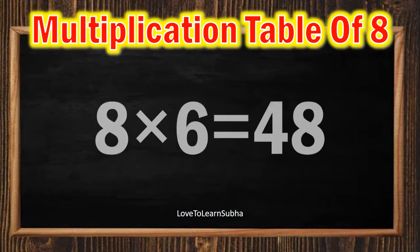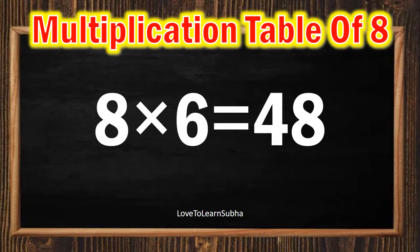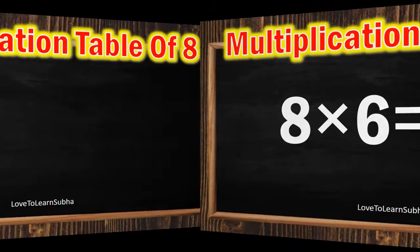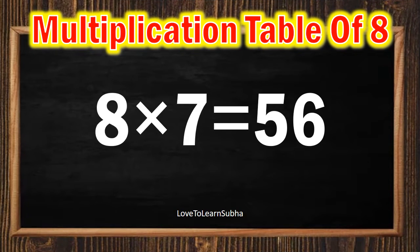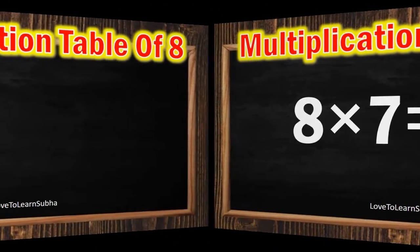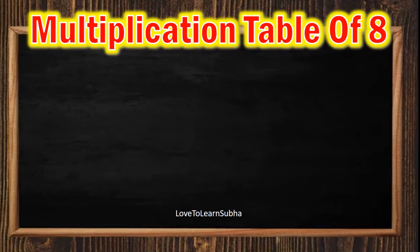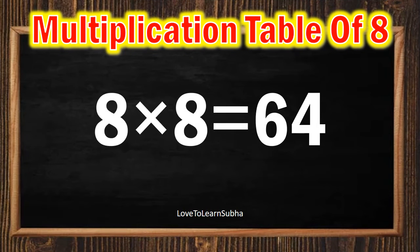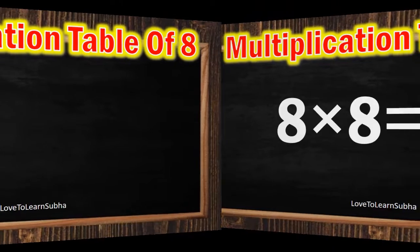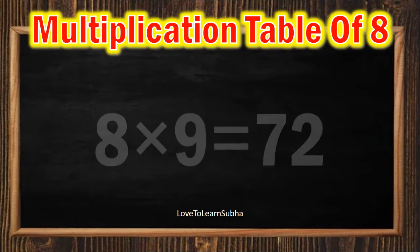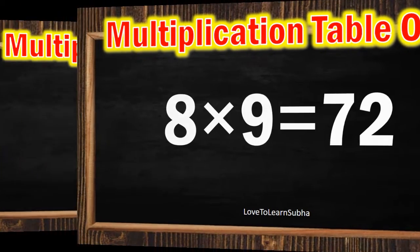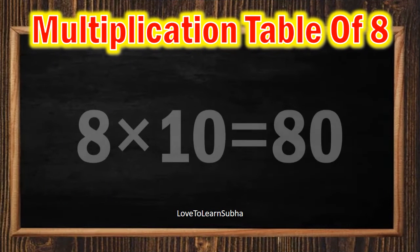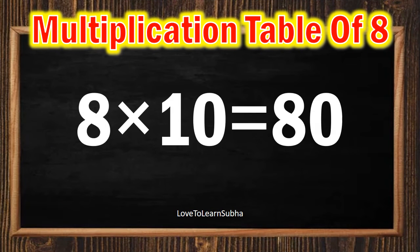8 sixes are 48, 8 sevens are 56, 8 eights are 64, 8 nines are 72, 8 tens are 18.